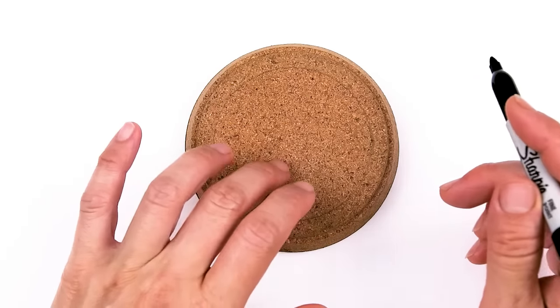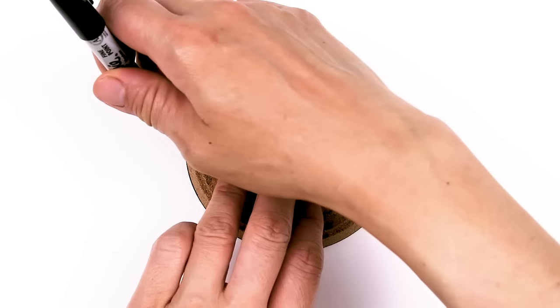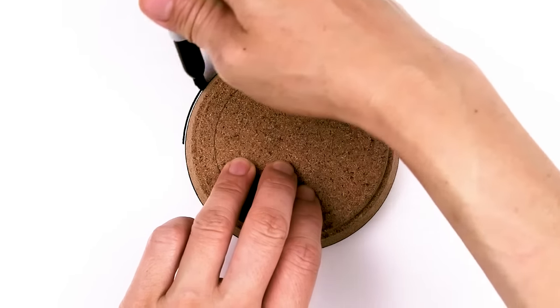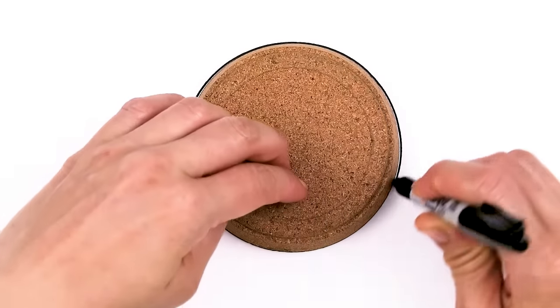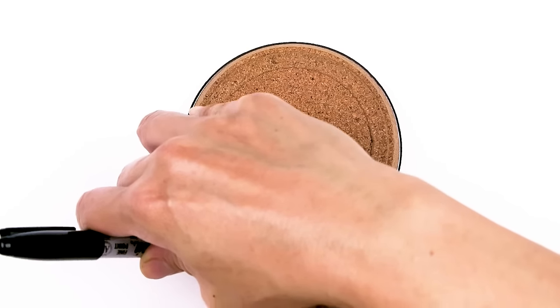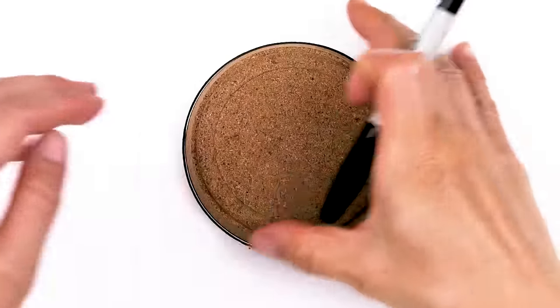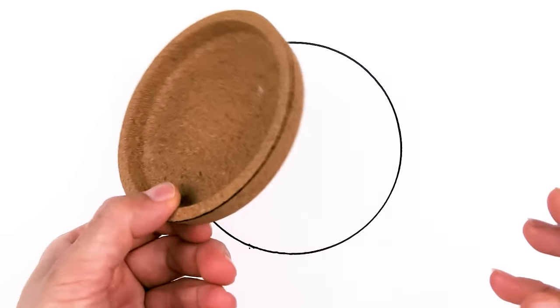To draw this cute earth let's first start by drawing a circle. Because it's pretty big I'm going to use this as my circle template to draw this circle to make everything a lot easier. It's just something I found that's about the right size at home, just a little cork dish.